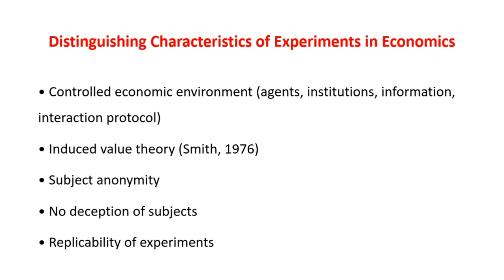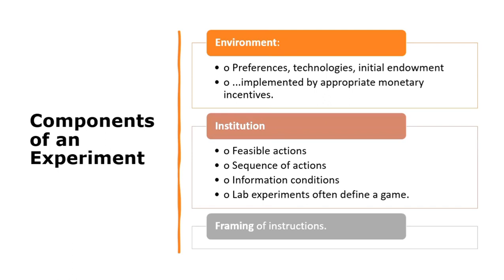Now let's talk about the components of an experiment. First is the environment, which includes individuals' preferences, technologies, initial endowments, etc., implemented by appropriate monetary incentives. Next is institution, which means the rules of the game — this includes what actions are feasible, the sequence of actions agents can perform, and the information conditions, such as how much information is shared and how. Lab experiments often define a game, and it is interesting to note that game theory and experimental economics are strongly related and affect each other. Then there is the framing of instructions — that is, how instructions are ordered and passed on to subjects, including the choice of words used.